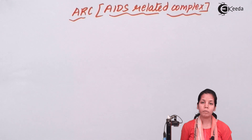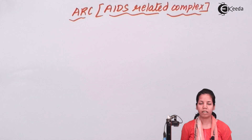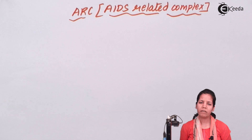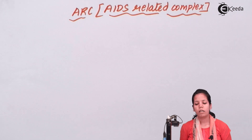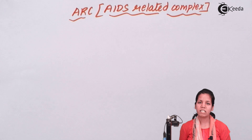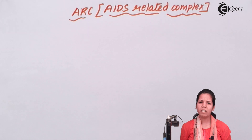Diarrhea could be present. There could be CNS or cerebral infections — the fluid around the brain can be infected. Apart from that, there could be persistent and recurrent fever continuously in the body. Herpes infection could arise, and lymph nodes, especially in the neck region and lower back region, could be inflamed.